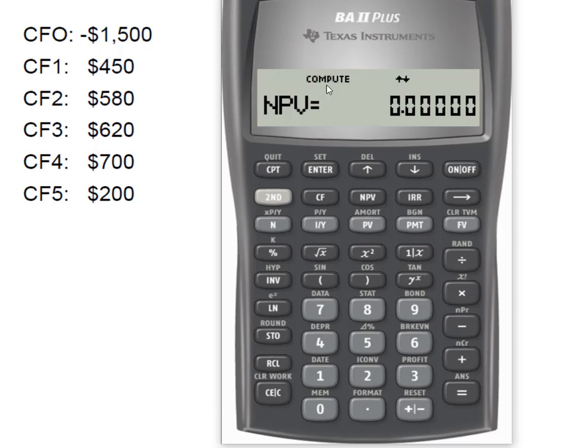Now you'll see that your screen says compute NPV and so that's exactly what I want to do. I'm going to come up here. I'm going to use my CPT or compute key. I'm going to hit that in like a nanosecond. Texas Instruments tells us that the net present value of this project is $505.66.